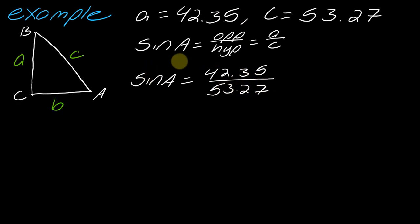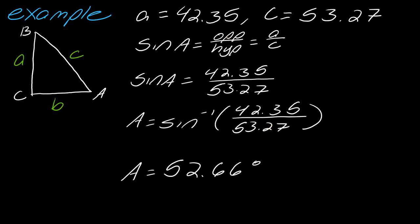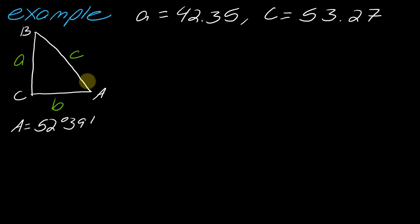The way to solve for a in this case is to use the inverse sine function. So I want to plug into my calculator inverse sine, then plug in 42.35 over 53.27. I'm going to round this entire number. This comes out to 52.66 degrees. However, we are using minutes and seconds, so I only need four significant digits. Notice I've rounded this to 52 degrees 39 minutes - this is four significant digits. You always want to keep that in mind.